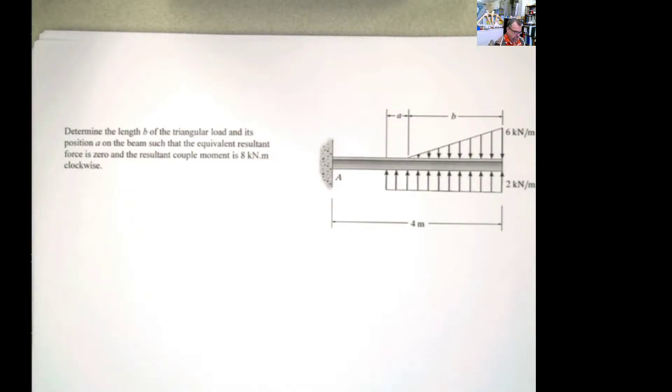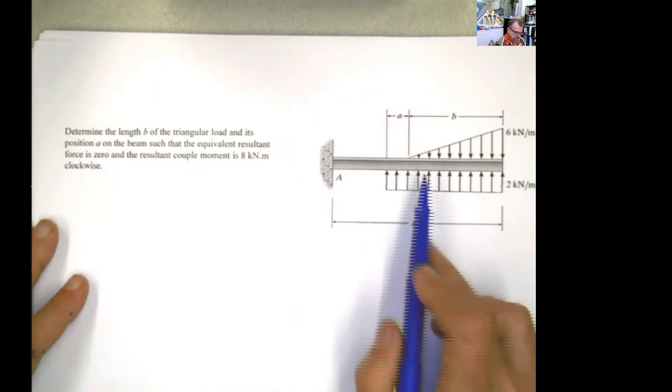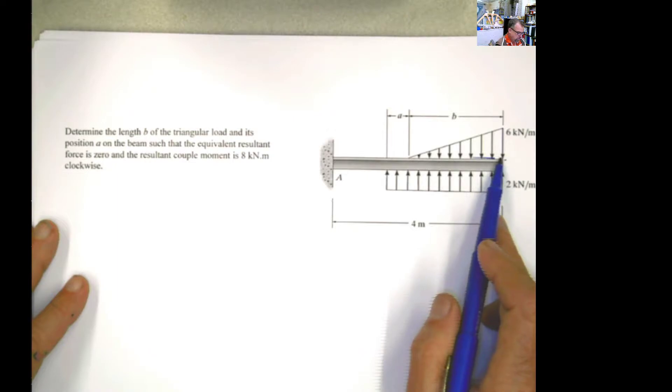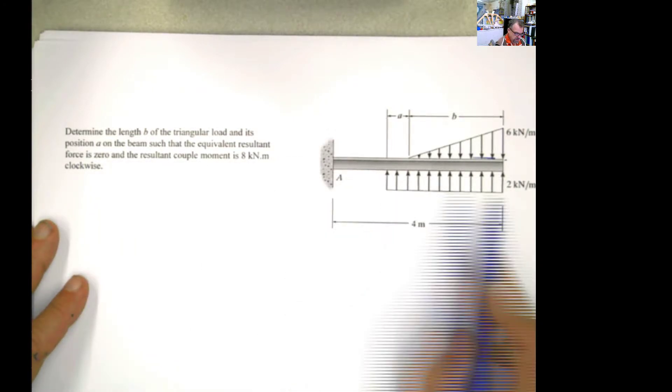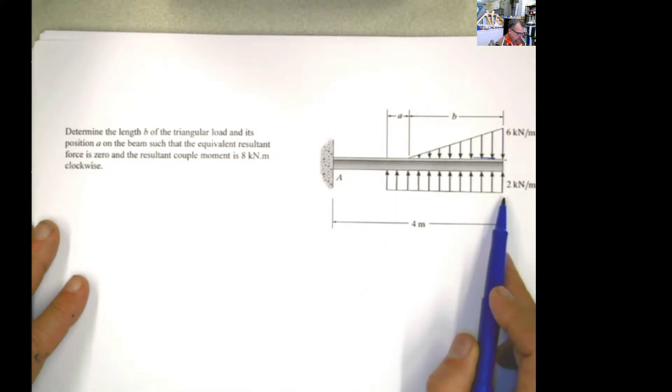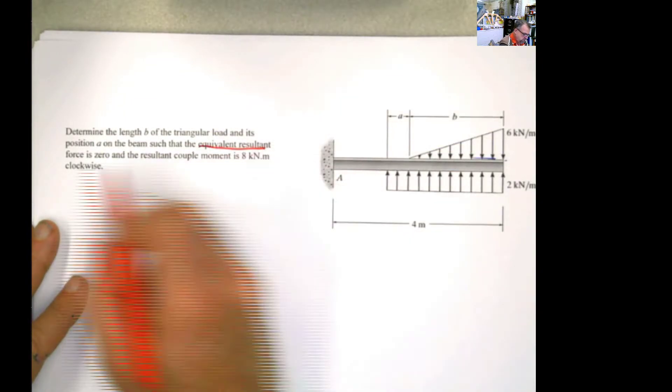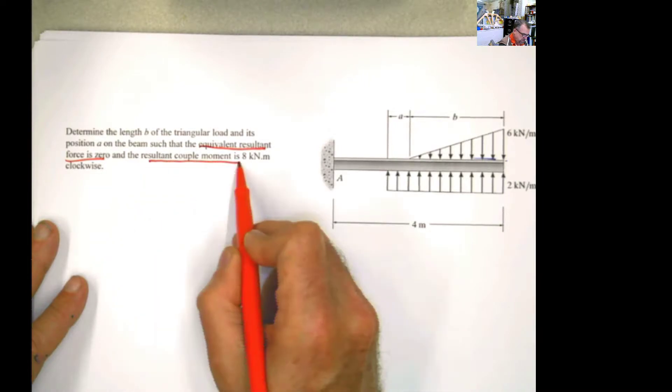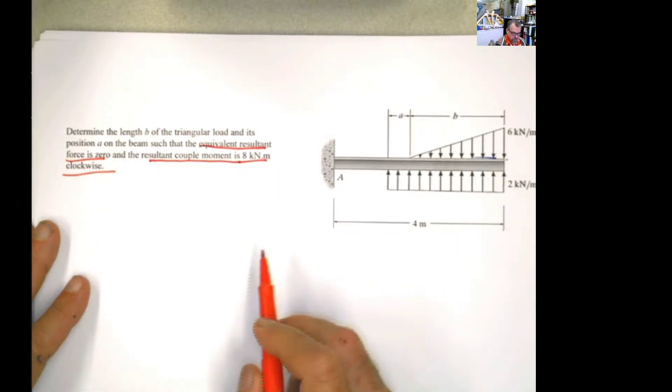So let's read the problem first. It says, determine the length of the triangular load. So I don't know the length of the triangular load and I don't know the length of the rectangular load. But I know two very important things. I know that the equivalent resultant force is 0, and also the moment is 8 kilonewtons clockwise.